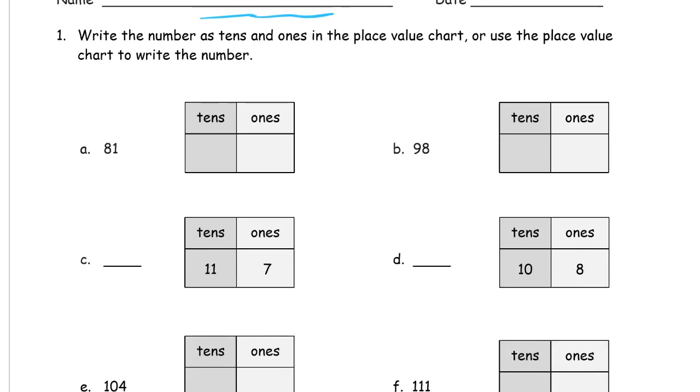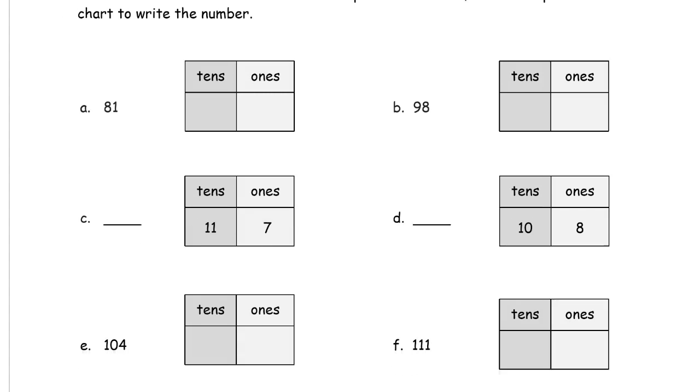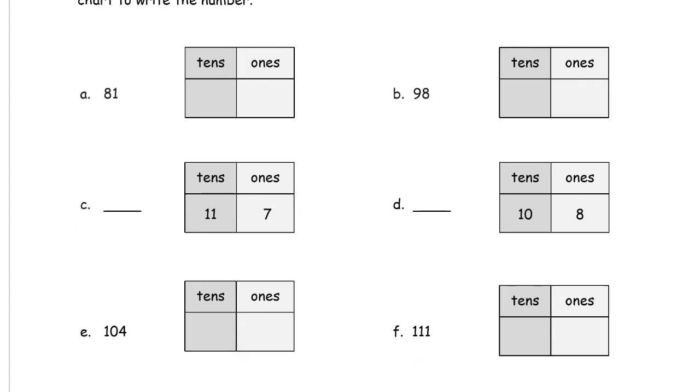Write the number as tens and ones in the place value chart, or use the place value chart to write the number. So whatever we're given. Here's the number 81. Say it out loud. That's eight tens and one one. Say all of this out loud, just as I do. 98. That's nine tens and eight ones.